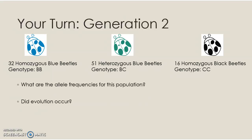The last step of this homework is for you to do this for generation two. Those beetles reproduced and we ended up with 32 homozygous blue beetles, 51 heterozygous beetles, and 16 homozygous black beetles. Calculate the allele frequencies for the B allele and the C allele, then tell me whether evolution occurred — if the allele frequencies are different from generation one, evolution occurred; if they're the same, it did not. Turn in your notes and this work on Monday for extra credit.